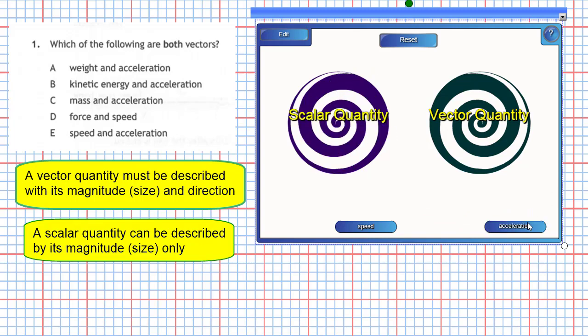No, acceleration is not a scalar quantity because acceleration depends on force, and force is a vector quantity. So acceleration will need a direction to describe it fully as well. So that's a vector quantity.